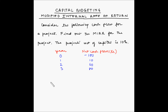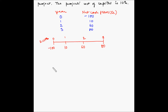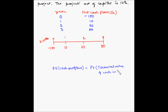Let me first represent this project on a time scale. K is the cost of capital, which is 10%. We know that MIRR is the discount rate at which the present value of the cash outflows is equal to the present value of the terminal value of the cash inflows. So let's first find out the terminal value of cash inflows. Terminal value means we have to find out the value of the inflows at the end of the tenure.